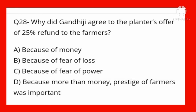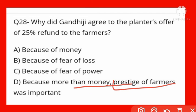Why did Gandhi Ji agree to the planters' offer of 25 percent refund? Options: because of money, fear of loss, fear of power, or because the prestige of the farmer was more important than money. Option D is correct — kyunki dhan ki apeksha kisanon ki pratishtha was more important.